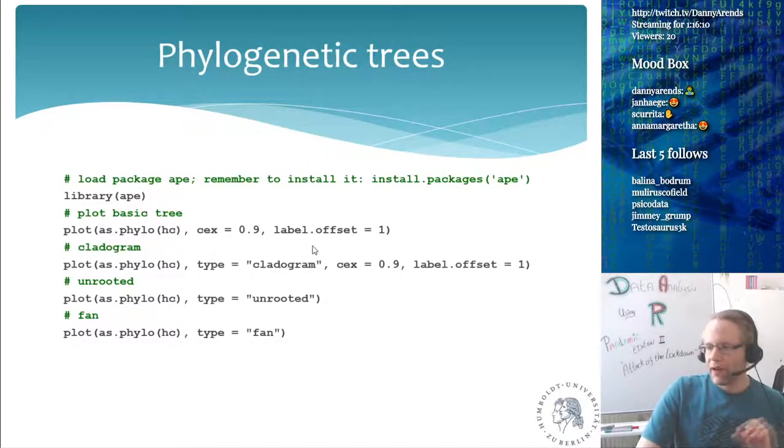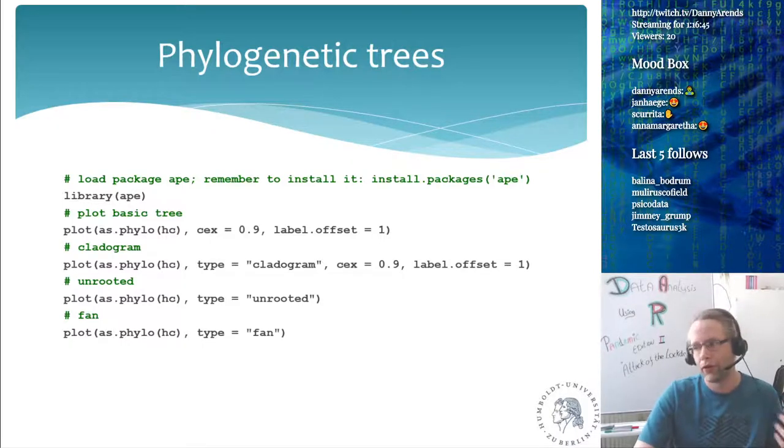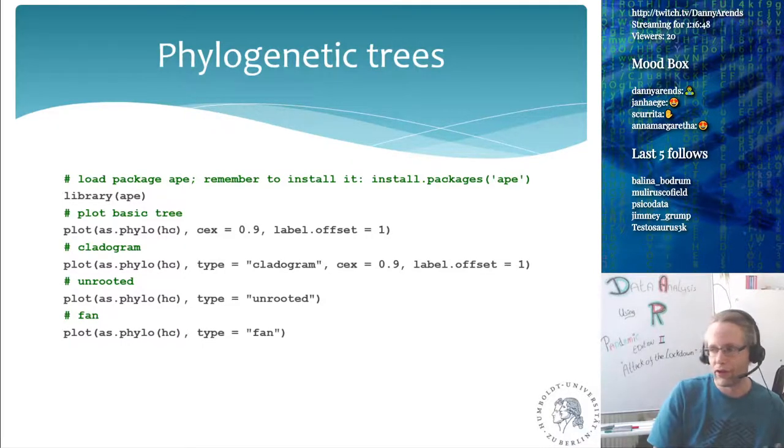All right, so dendrograms and phylogenetic trees are very related to each other, but there is this special package called APE. You have to remember to install it, and that can help you make really cool-looking phylogenetic trees. Phylogenetic trees are ubiquitous in biology, so you can use it for more or less everything, to show inheritance of alleles, but you can also show, for example, the distance. You can use it to make a tree of life, and they're used a lot in biology, and they're really understandable pictures.